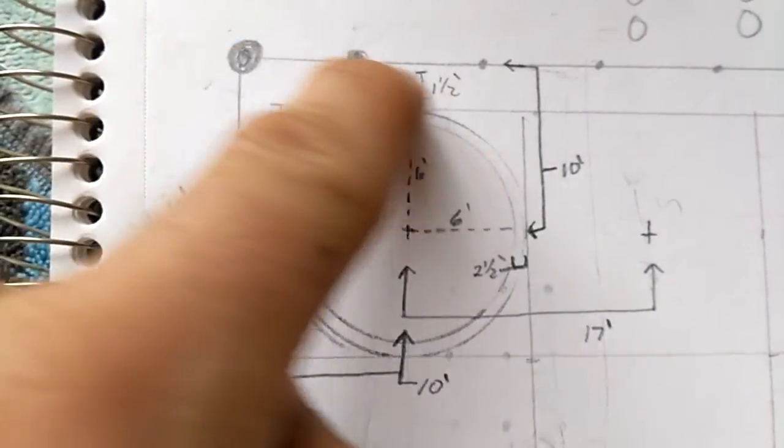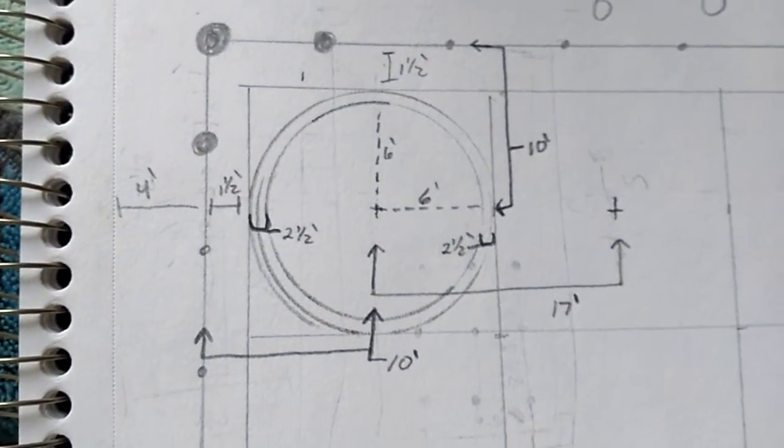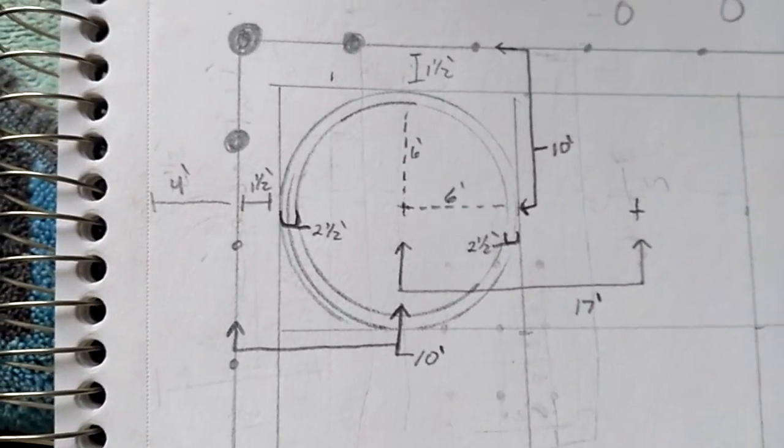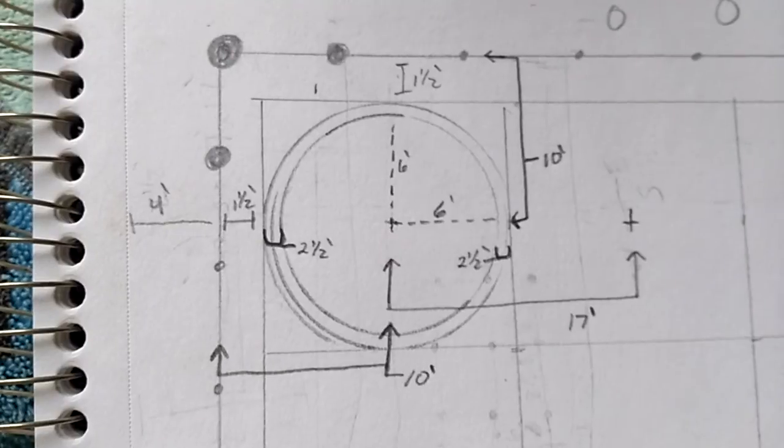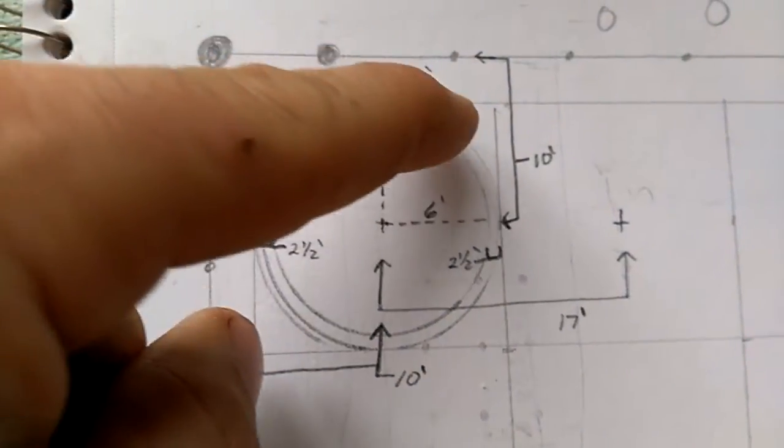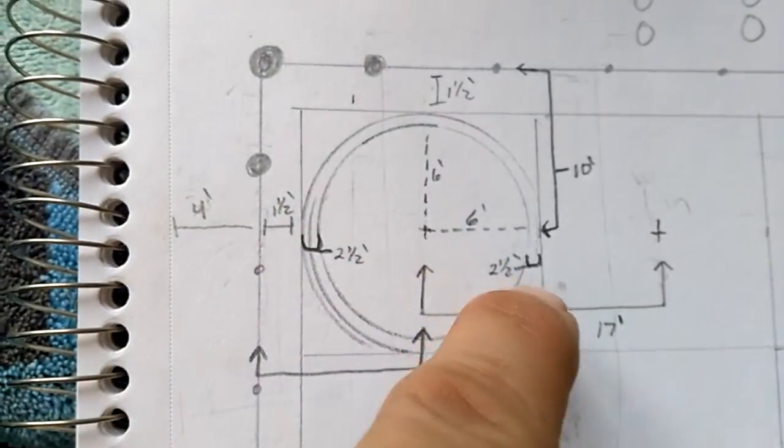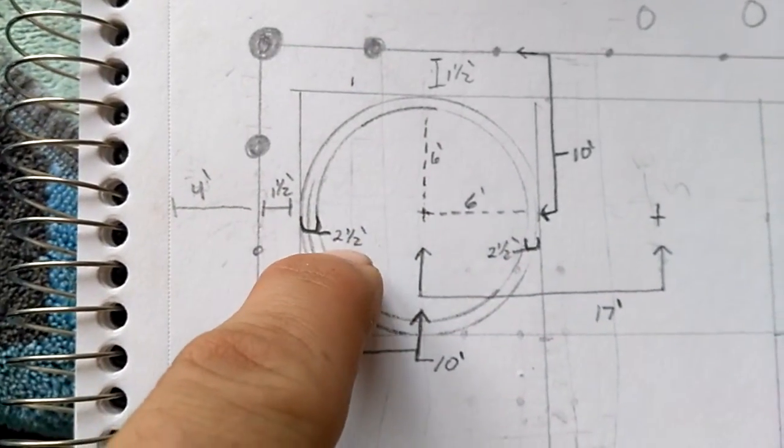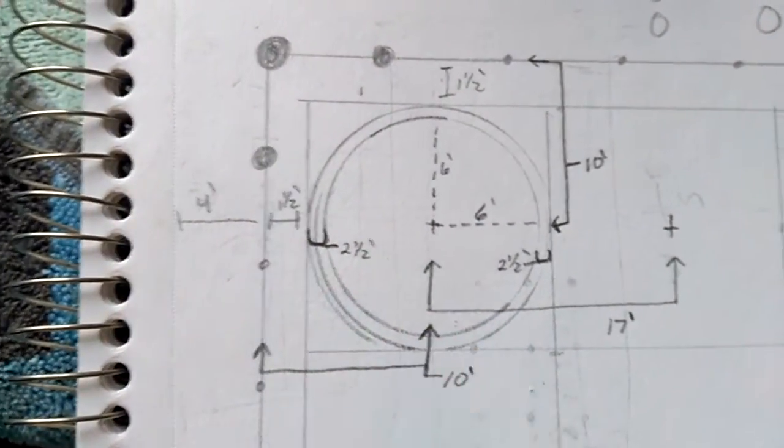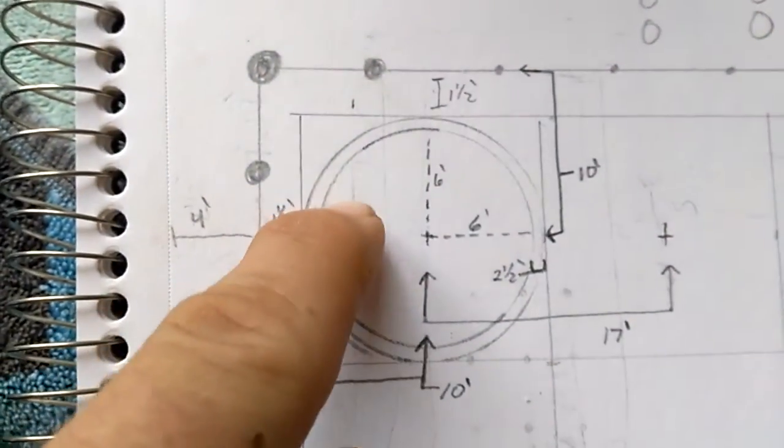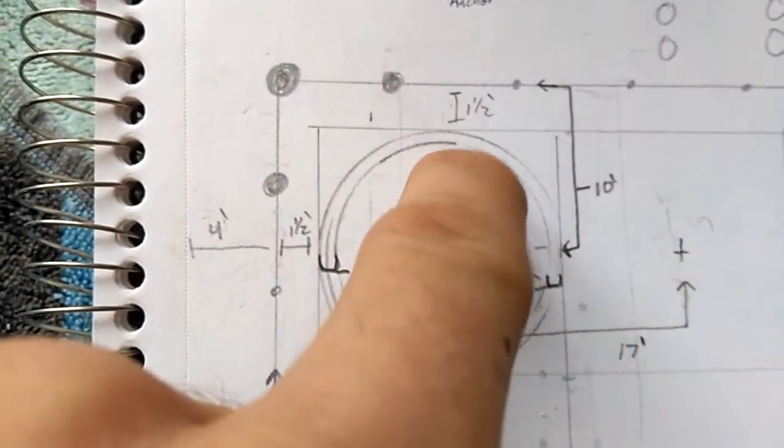This line here is your fence line and I figured in the previous video I said you come in four feet, but to make it easier we're going to stick with this 17-foot cube because it's 12 plus 2.5 plus 2.5. It's 17 feet across by 17 feet across and to get your four foot perimeter from the fence you just come in a foot and a half both ways.